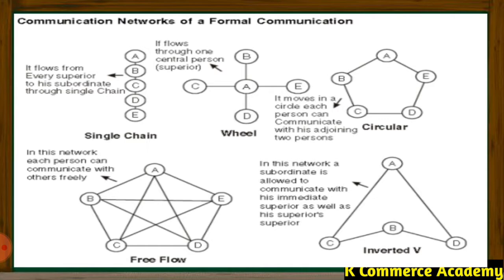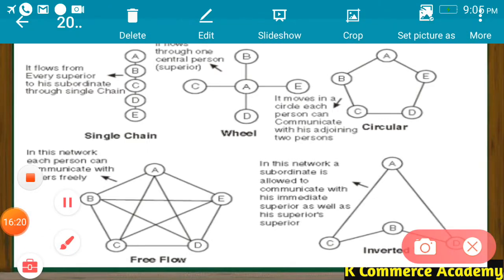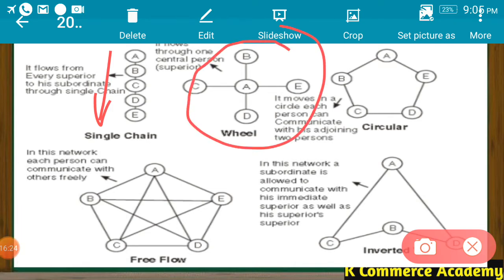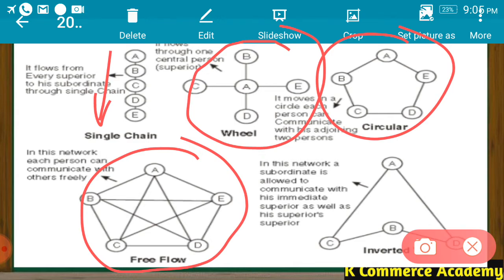The last one is inverted V — the letter V turned upside down. In this network, A is at the top, B is under A, and C and D are subordinates under B. The situation here is that C and D, who are subordinates, can communicate with B as well as directly with A — the superior above their own superior. They can communicate directly with the higher superior. This shape looks like an inverted V, which is why it is named inverted V. The names of all networks come from their shapes: single chain, wheel, circular, free flow, and inverted V.